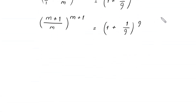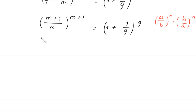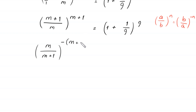Now, by using the property of exponents — a over d, whole to the power n, is equal to d over a, whole to the power negative n — the expression on the left hand side can be rewritten. We add 1 and subtract 1 within the expression. This is equal to 1 plus 1 over 9, whole to the power 9.